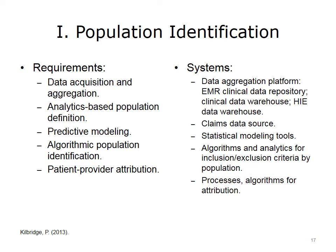We have previously discussed requirements for identifying a population — data acquisition and aggregation. We identified many data sources. The data needs to be normalized, brought together, and aggregated so that we have what we call a 360-degree patient view — as much information about the patient on an individual level as possible. We need analytics-based population definition, predictive modeling, algorithmic population identification, and patient and provider attribution. We need to know who the providers are interacting with the patient, including methodology to identify who's providing the majority of the care.